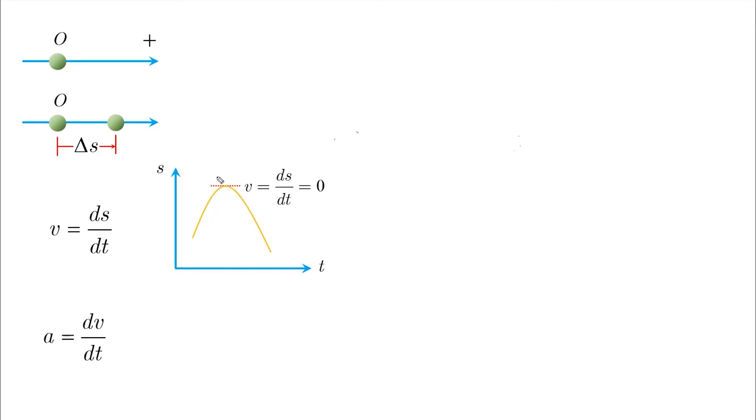In a similar way, the derivative of velocity with respect to time is the acceleration, and it also becomes zero when dv over dt is equal to zero. This happens when the particle is at rest or moving with constant speed.